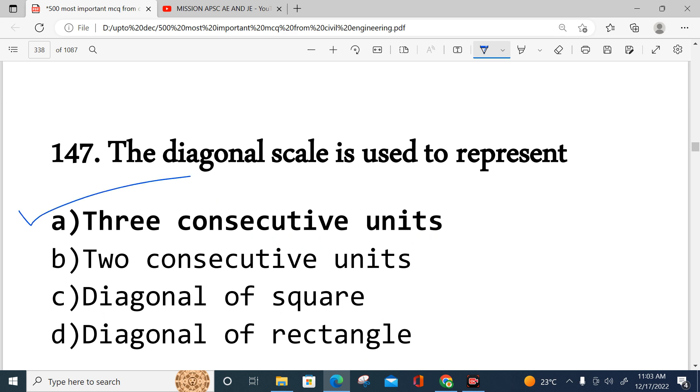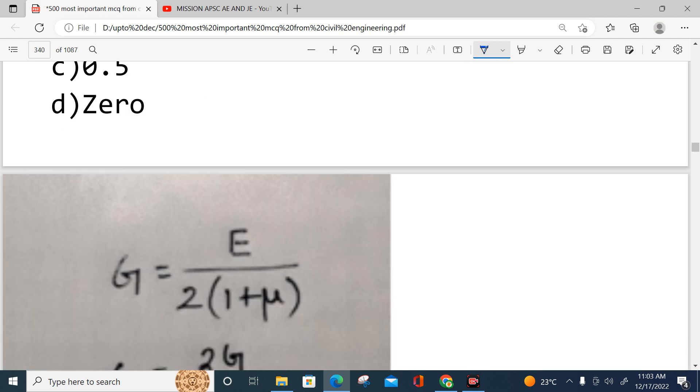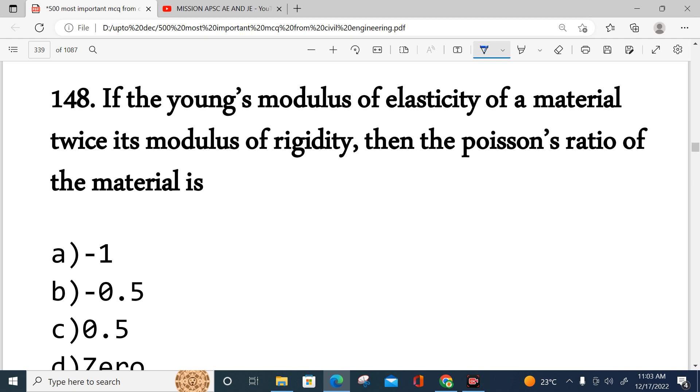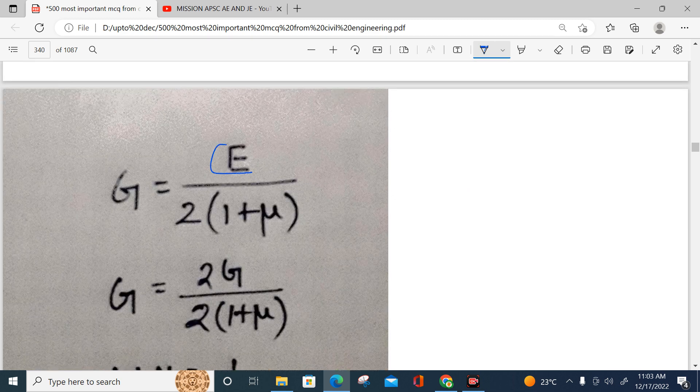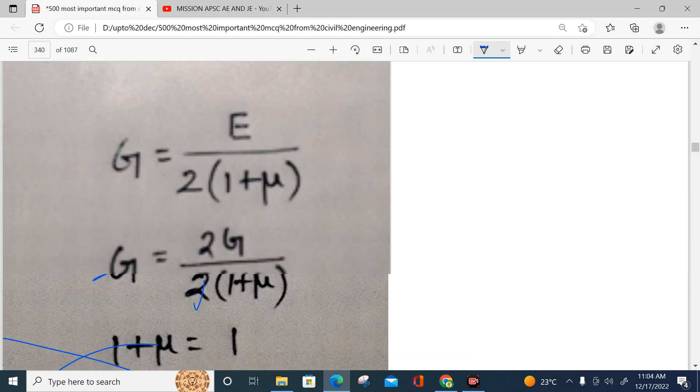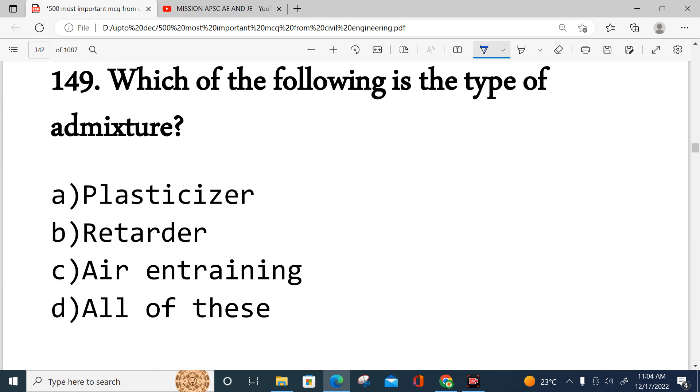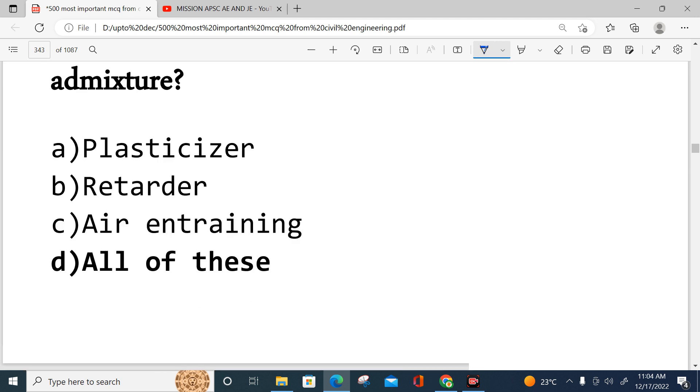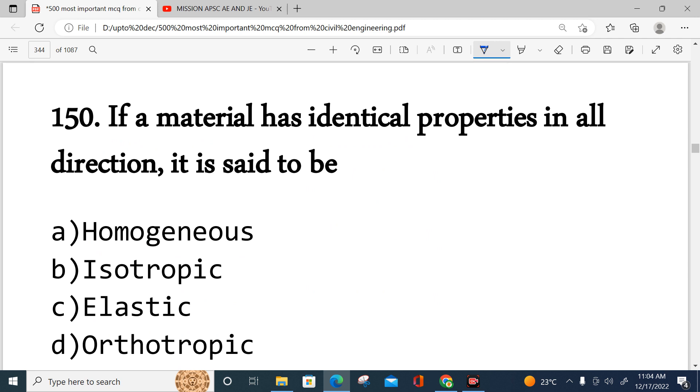If Young's modulus of elasticity of a material is twice its modulus of rigidity, then Poisson's ratio - E equals 2 times G. So 2G equals 2G times (1 plus mu), which gives 1 plus mu equals 1, so mu equals zero. Option D is correct. Question 149: Which are the following type of admixture - plasticizer, retarder, air entraining - all of these are admixtures for cement mix.